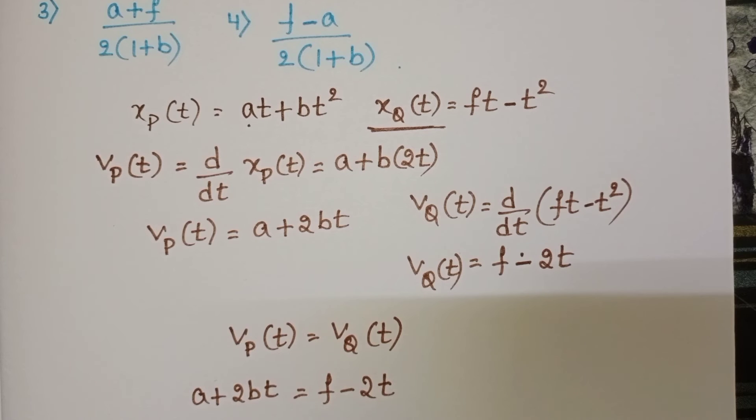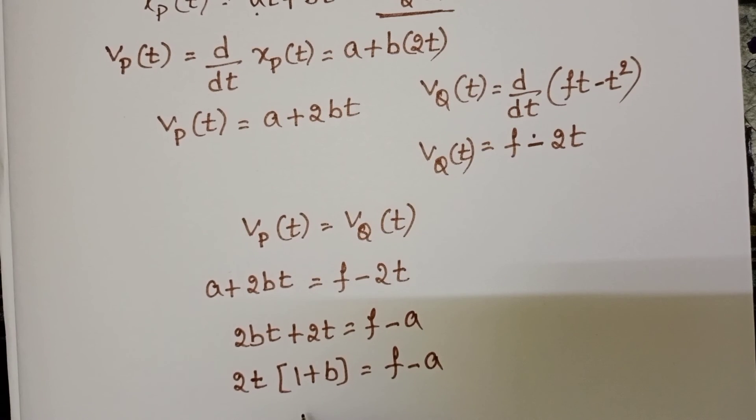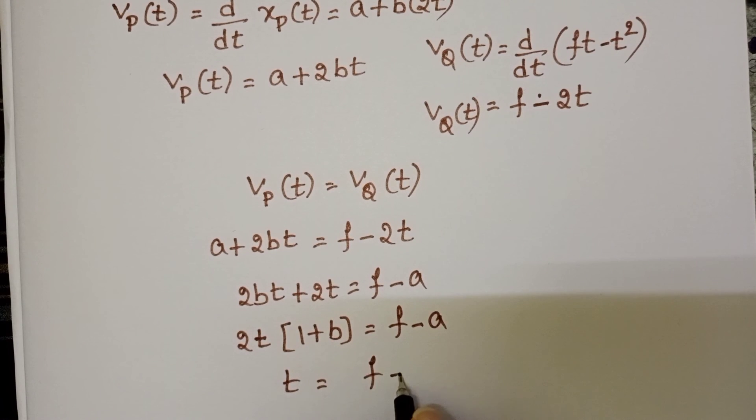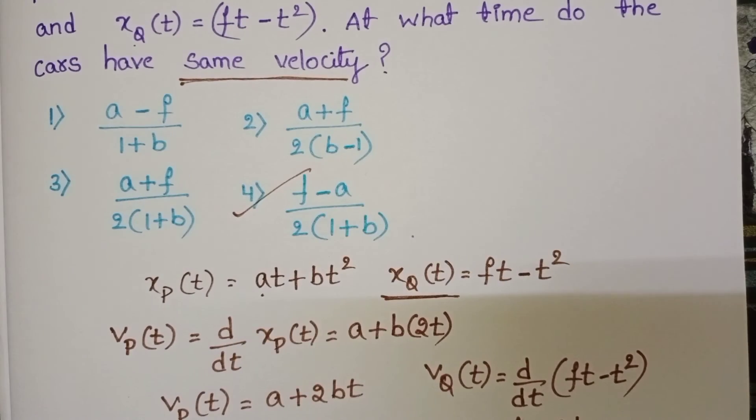2bt + 2t = f - a. Take 2t common: 2t(1 + b) = f - a. Then t = (f - a)/(2(1 + b)). The 4th option is correct.